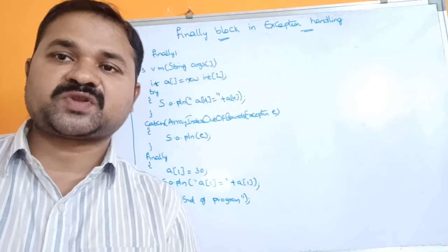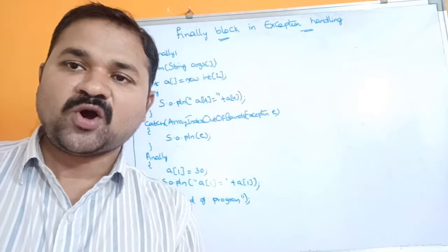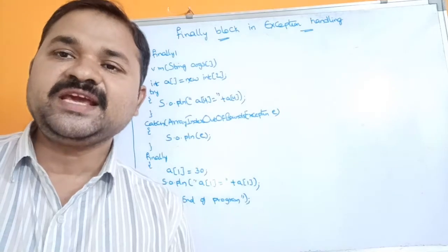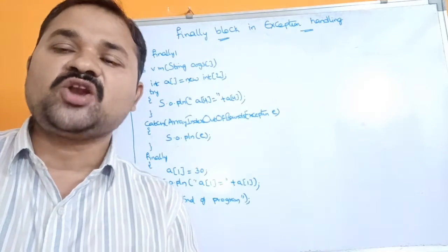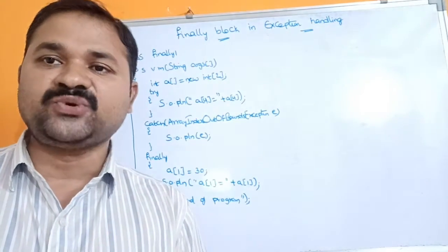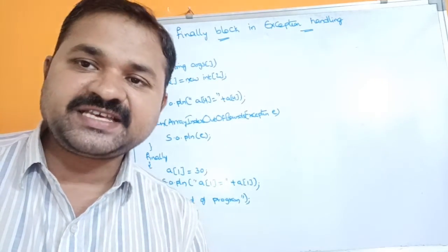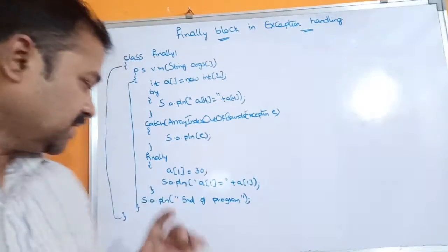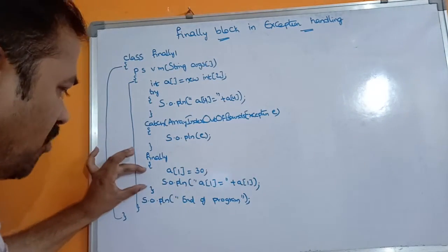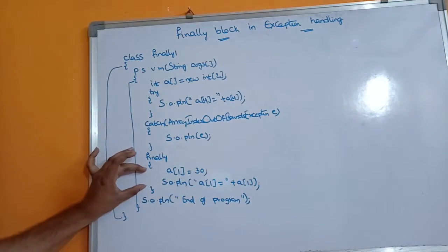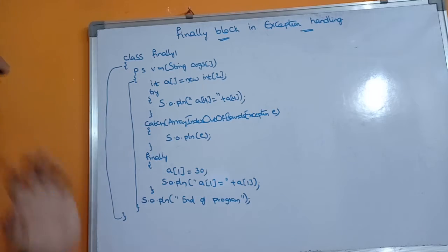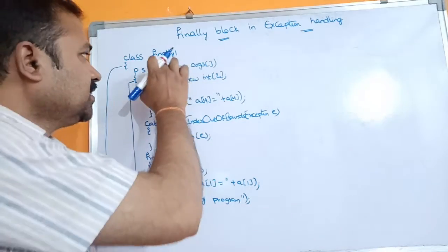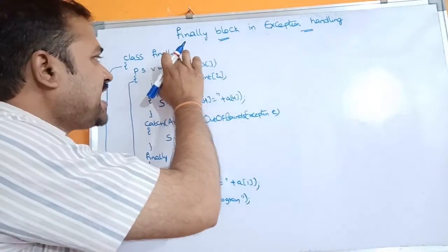Now let's see about the finally block in exception handling. The finally block is always executed whether there is an exception or no exception. We can have a finally block after the try and catch blocks. Let's see this example.